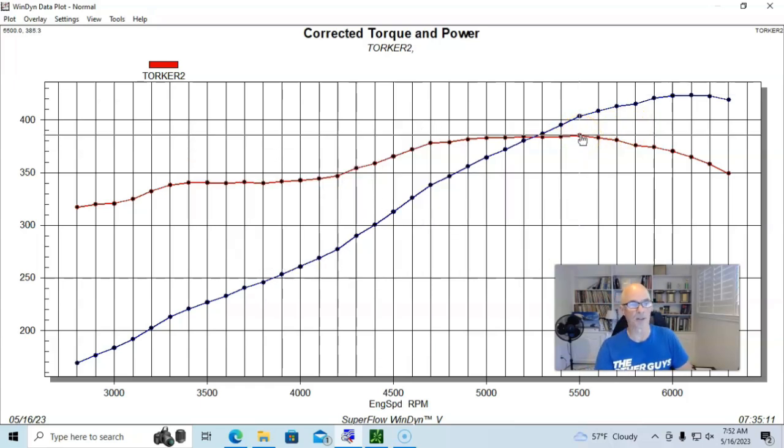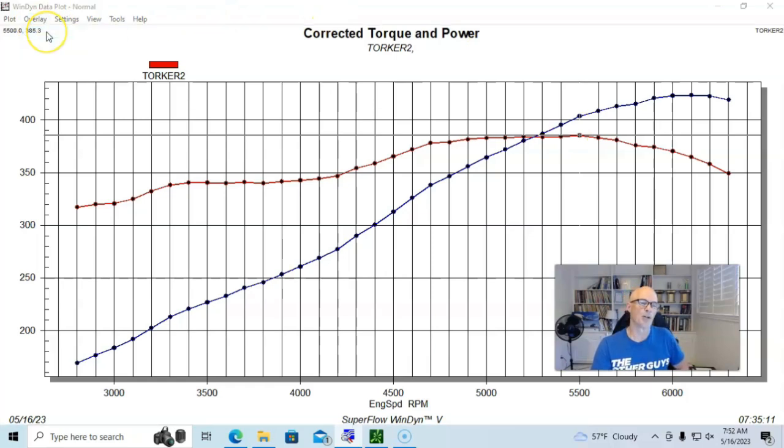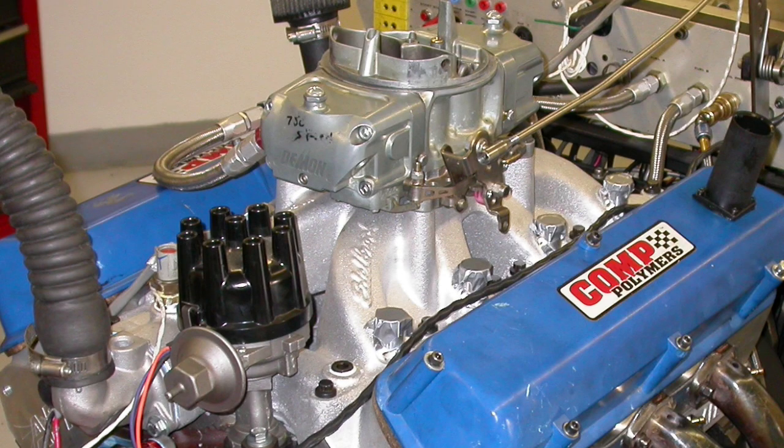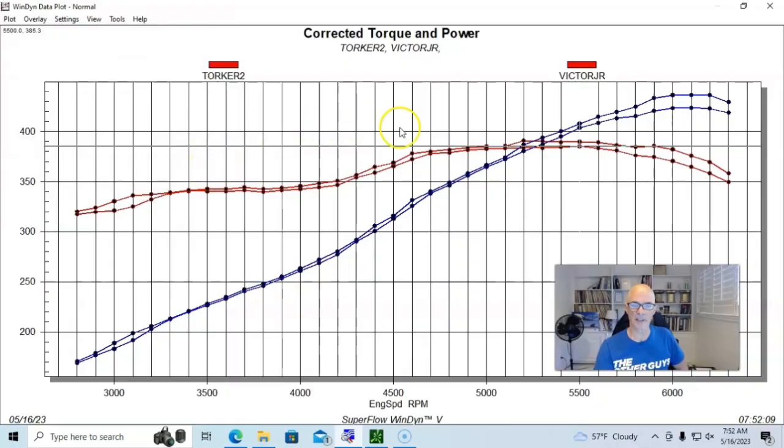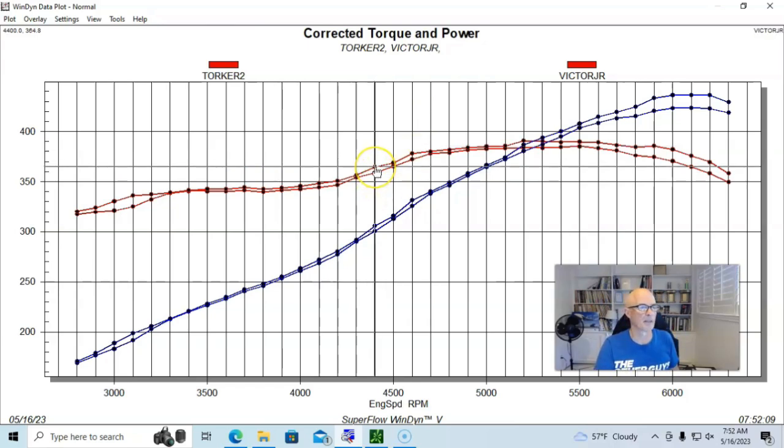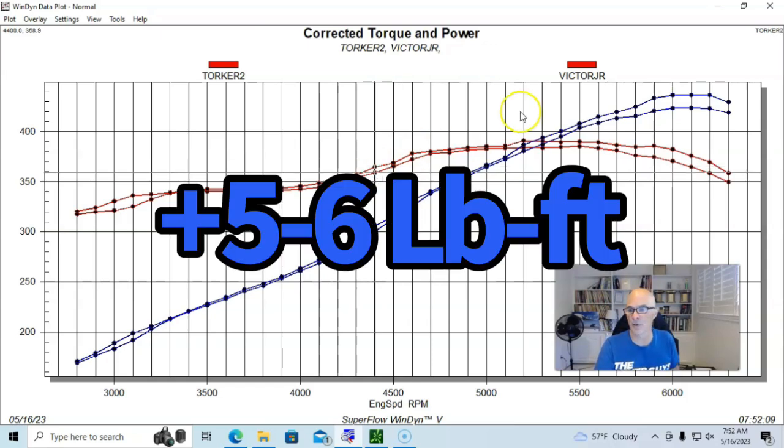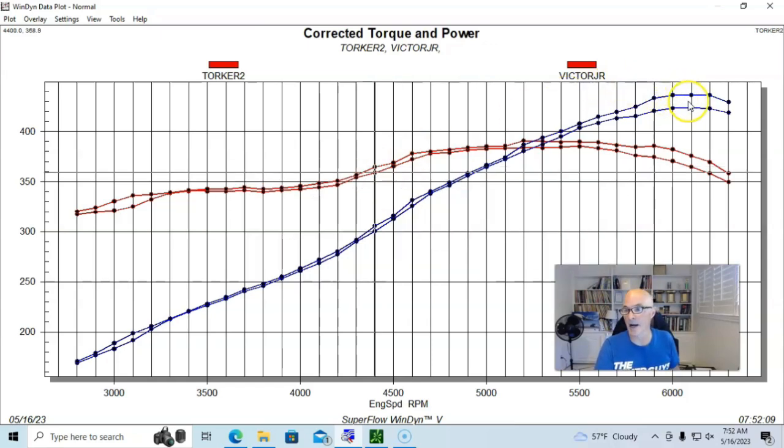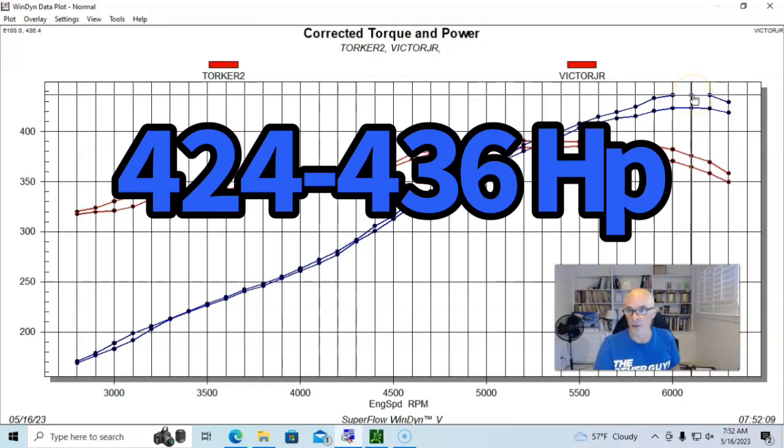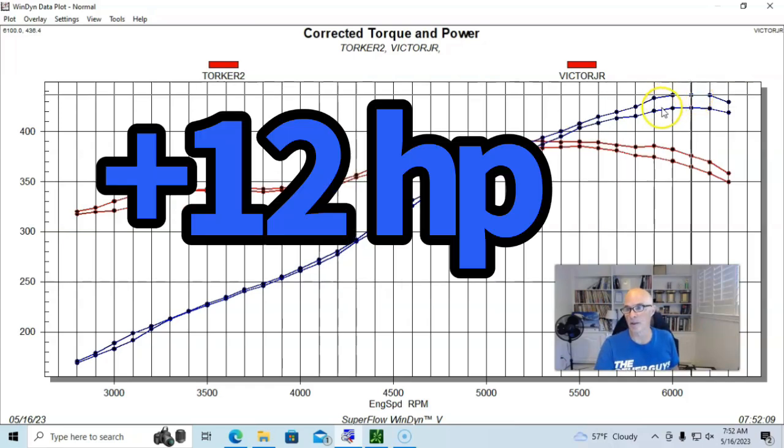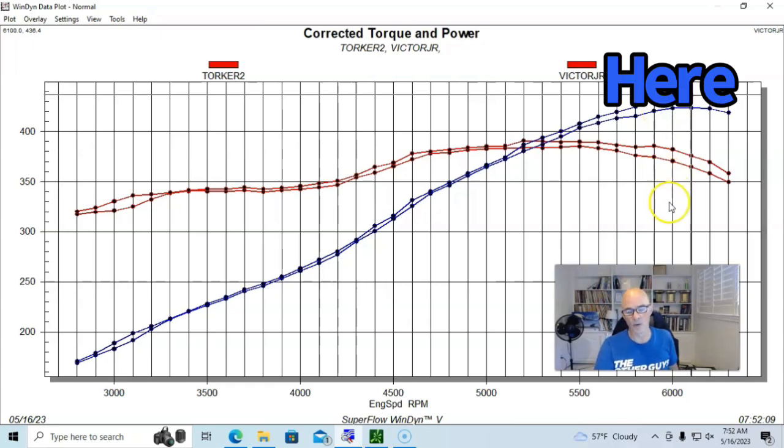And 385 foot pounds of torque. Here's what happened when we installed the Edelbrock Victor Jr. You can see that the Edelbrock Victor Jr made more power than the Torker 2 basically all the way through the RPM range, although not by a lot. We're looking in the middle here at gains of five or six foot pounds. The gains were even higher as we got out at the top of the rev range. 424 versus 436, so 12 horsepower, 12 to 13 horsepower out here at the top.